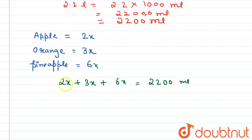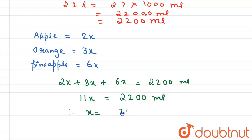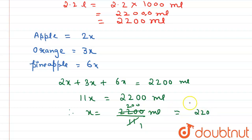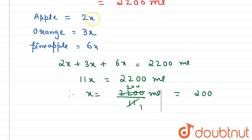By adding, we get 11x equals 2200 mL. Therefore x equals 2200 divided by 11, which gives x equals 200. So the value of x is 200.